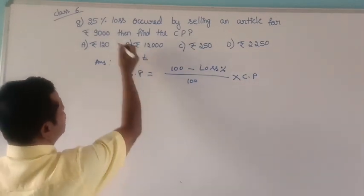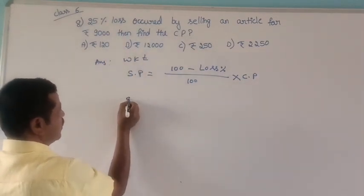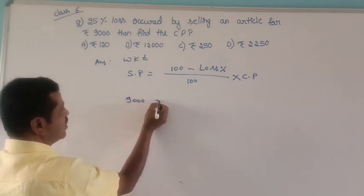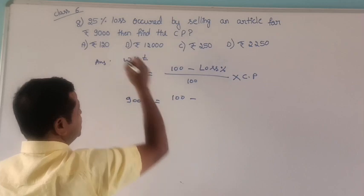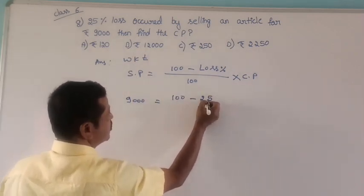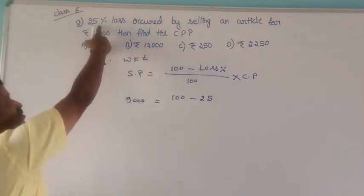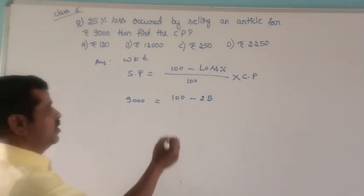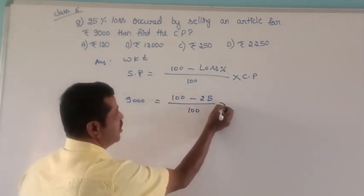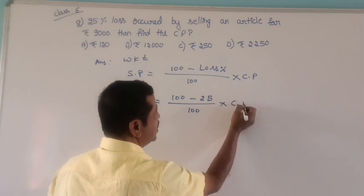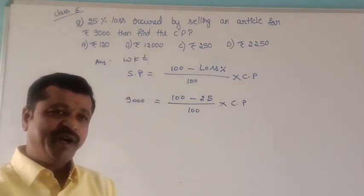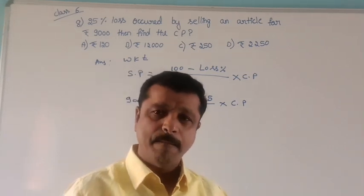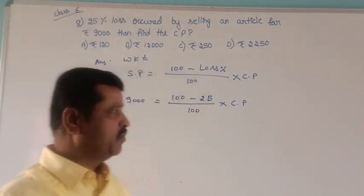SP 9000. 100 minus percentage of loss, percentage of loss 25, divided by 100 into CP. Find the CP, it is as it is because we need to find the CP.